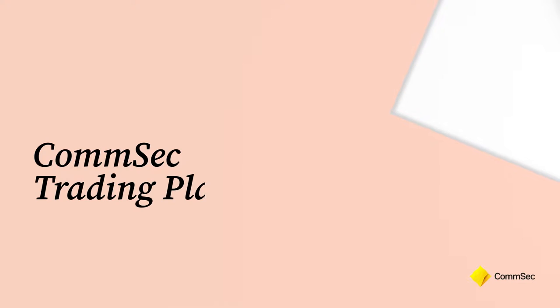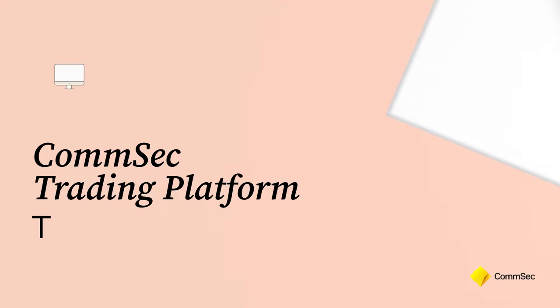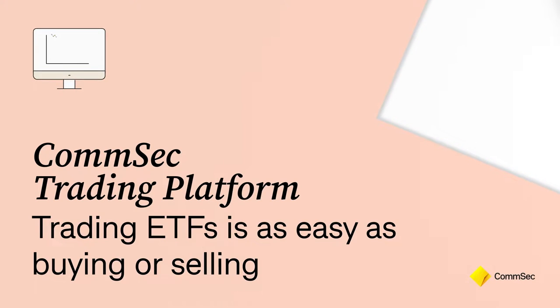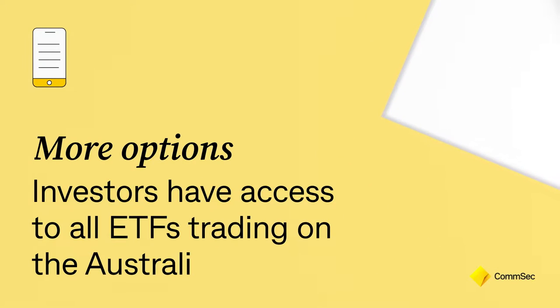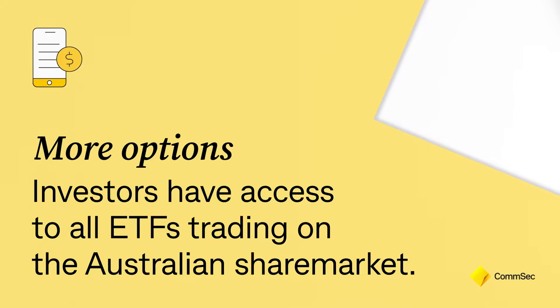There are two main ways you can invest in exchange-traded funds, or ETFs, with CommSec. The first is via the CommSec trading platform, in much the same way you'd buy or sell shares. Simply log into your online trading account, choose the ETF you'd like to invest in, and place a trade. A benefit of investing this way is it can give you greater control and access to all the ETFs trading on the Australian share market.